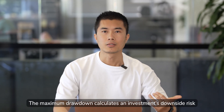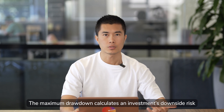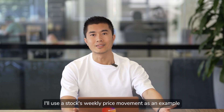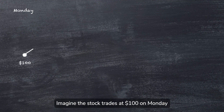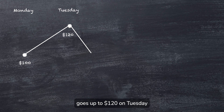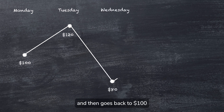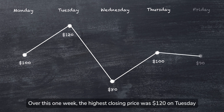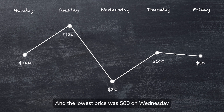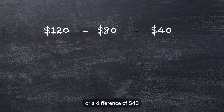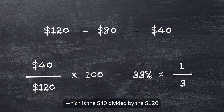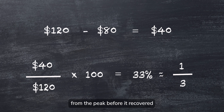So what is maximum drawdown? The maximum drawdown calculates an investment's downside risk. It compares the percentage loss from the highest price to the lowest price. For example, imagine a stock trades at $100 on Monday, goes up to $120 on Tuesday, drops to $80 on Wednesday, and then goes back to $100 the day after before ending the week at $90. Over this one week, the highest closing price was $120 on Tuesday and the lowest price was $80 on Wednesday, a difference of $40. So the maximum loss over this five-day period is 33%, which is the $40 divided by the $120. The stock lost about a third of its value from the peak before it recovered.